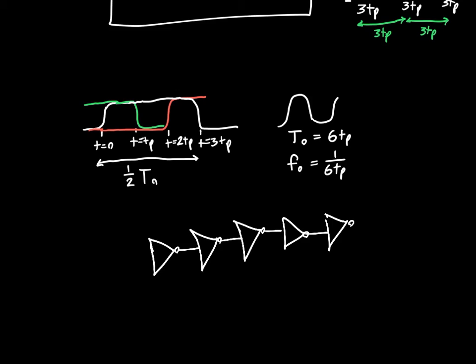And you'll see this pattern. It's staring us right in the face. For n inverters, the frequency of oscillation is just 1 over 2 times n times the propagation delay. That's going to be the frequency of oscillation of our ring oscillator.